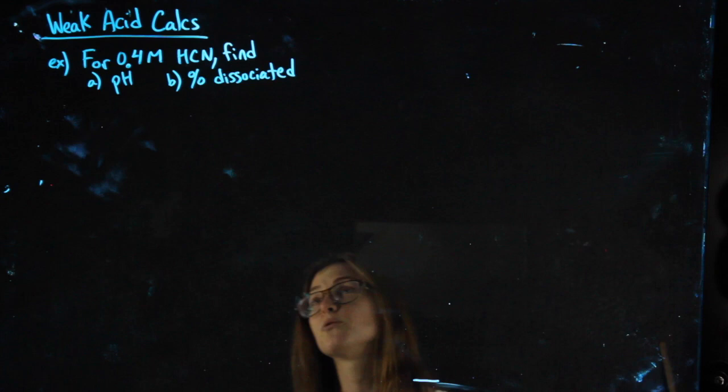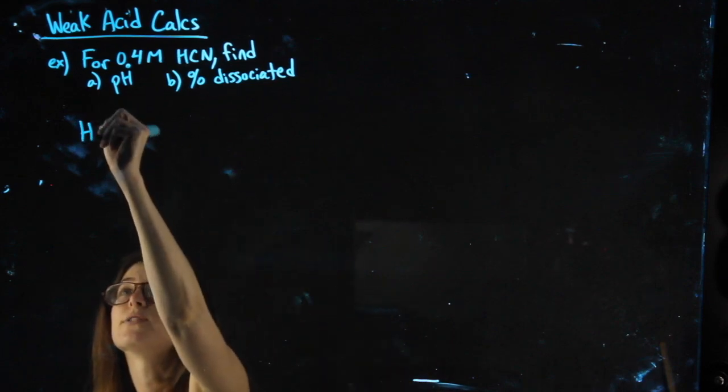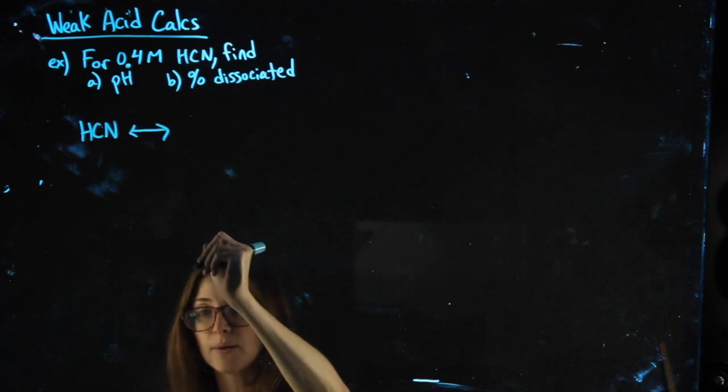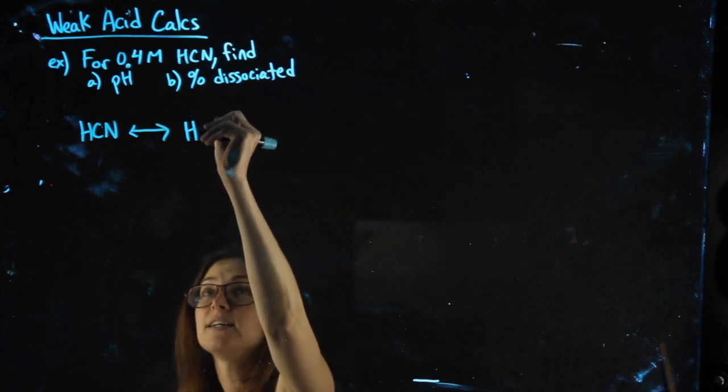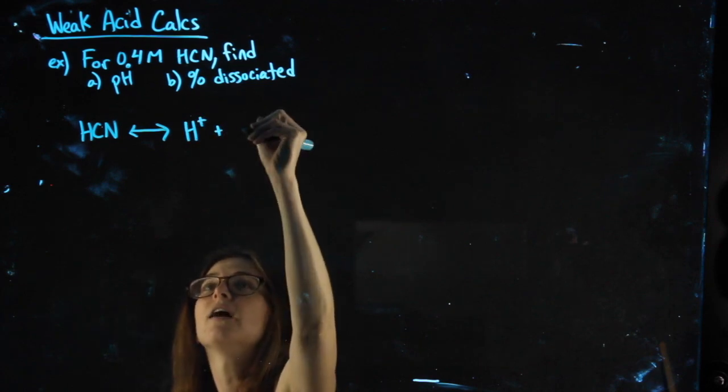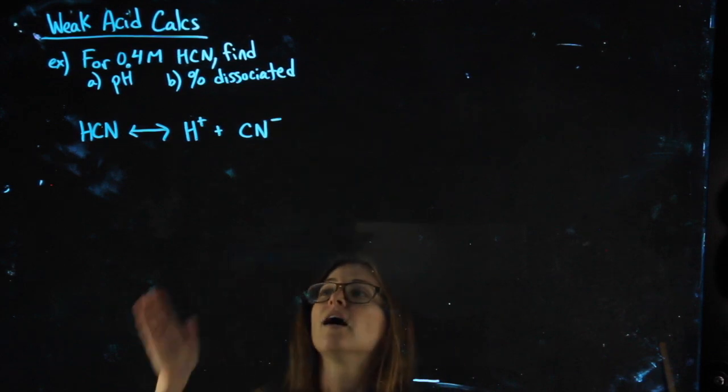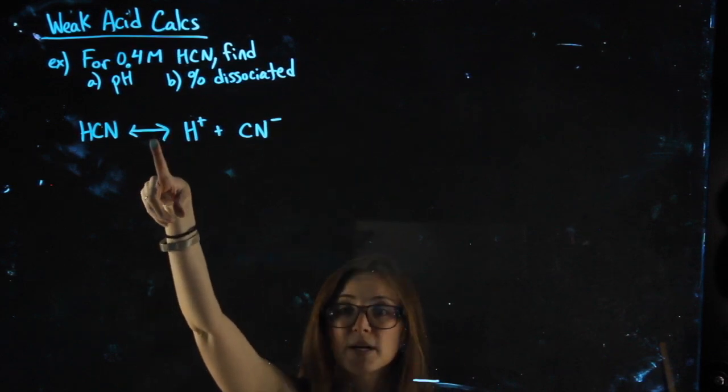The first thing I want to do with that weak acid is dissociate it. Since it's weak, I use equilibrium arrows. Since it's an acid, an H plus falls off. That leaves me with CN minus. Equilibrium arrows, because it's weak.